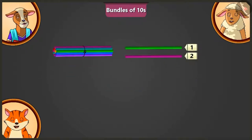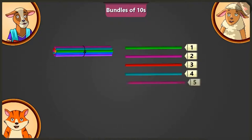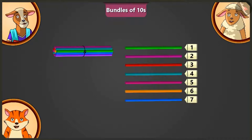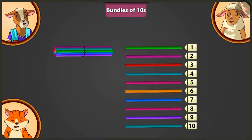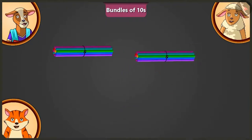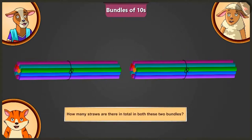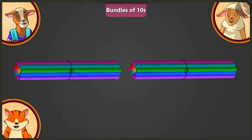Billy counts one, two, three, four, five, six, seven, eight, nine and ten for the second bundle. Asked how many straws are in both bundles in total, Billy answers: ten and ten makes twenty straws in total.